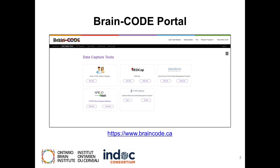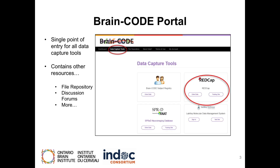To access the BrainCode Portal, visit www.braincode.ca. The BrainCode Portal is a single point of entry for all data capture tools. It contains other resources such as a file repository, discussion forums, and more. You can access REDCap by clicking on the Data Capture Tools tab at the top of the page.